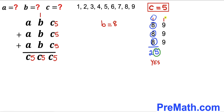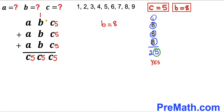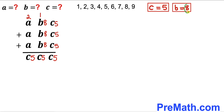Checking B=9: 1+9+9+9=28, ones digit 8≠5, so we rule that out. We conclude B=8 is the only option. We carry 2 over to the hundreds column.